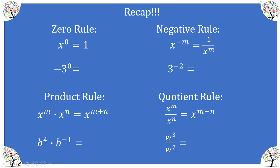Before we do that, let's recap the other four rules we have learned. The zero rule says anything raised to the power of zero is one. We have to be careful on this example because the negative is not attached to the three, so the base is just three. The zero is only attached to the three, so we really have negative one. If the negative and the three had been inside parentheses raised to the power of zero, we would have gotten positive one.